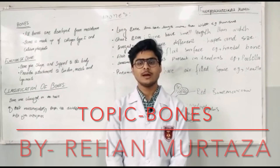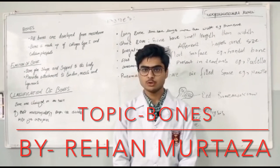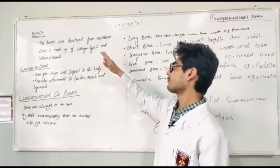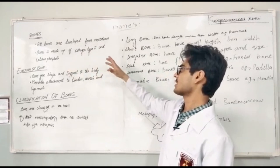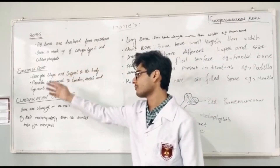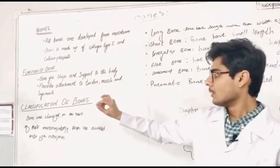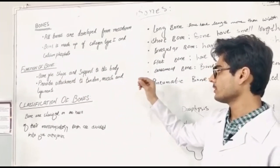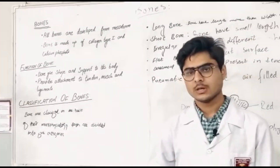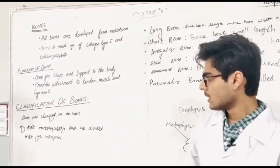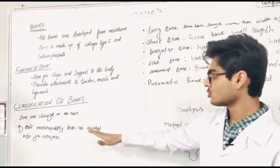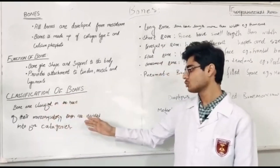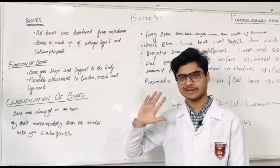Assalamualaikum. My name is Ihaan Nutswa, a student of OSH International Medical University. Today my topic is bone. All bones are developed from mesoderm. Bone is made up of collagen type 1 and calcium phosphate. Bones give shape and support to the body and provide attachment to tendons, muscles, and ligaments. Bones are classified on the basis of morphology and divided into five categories.